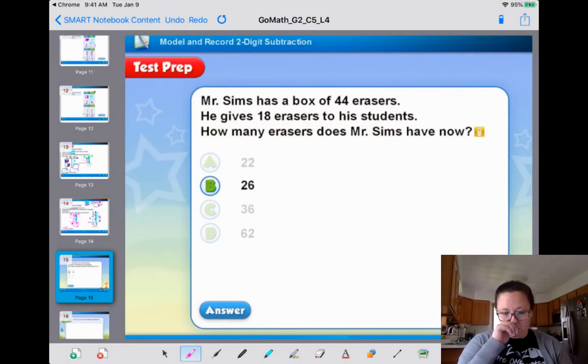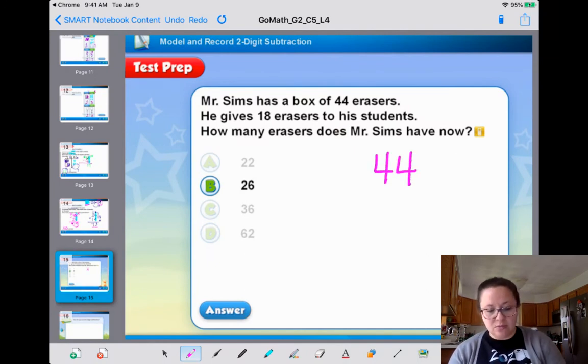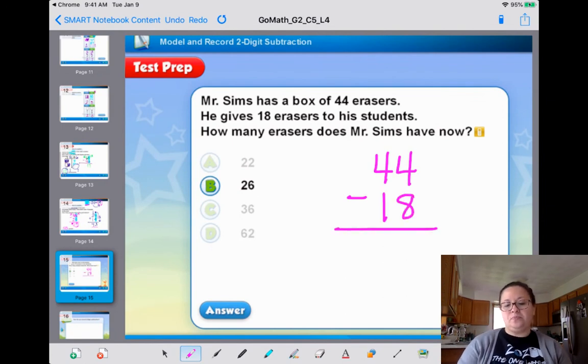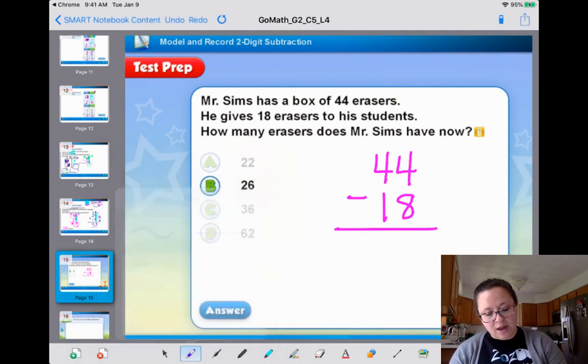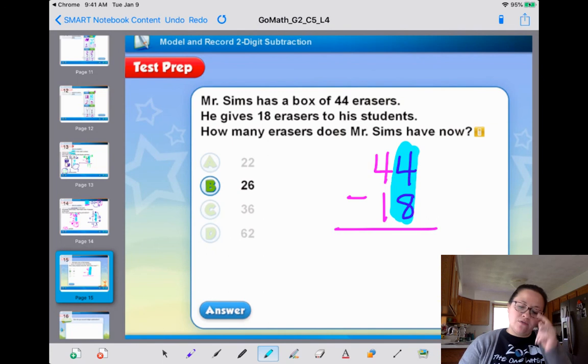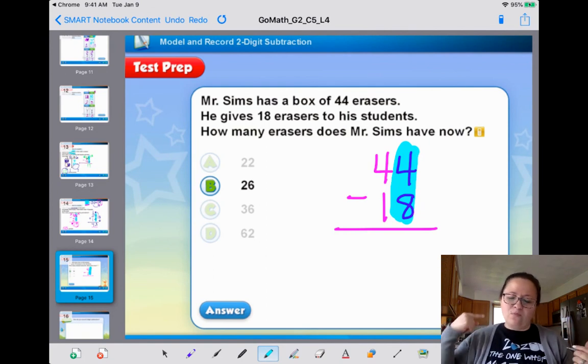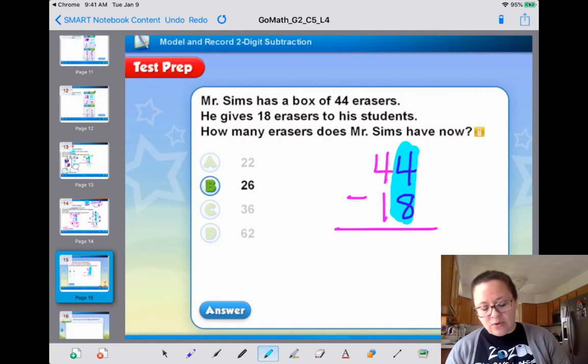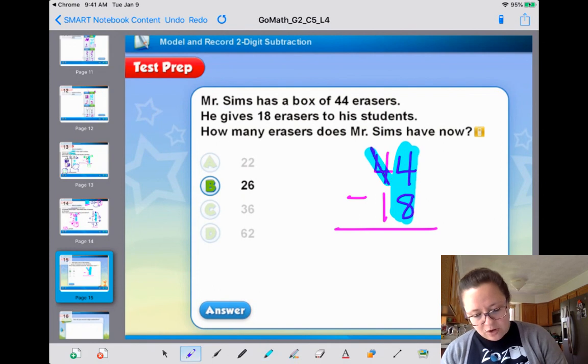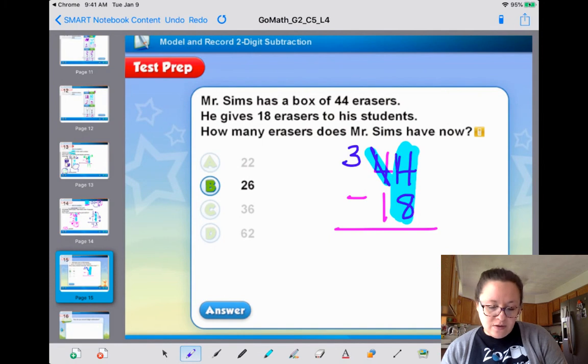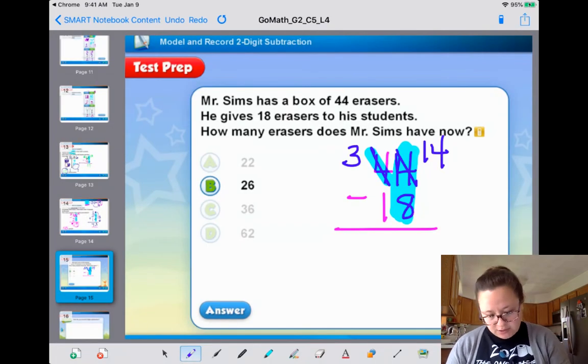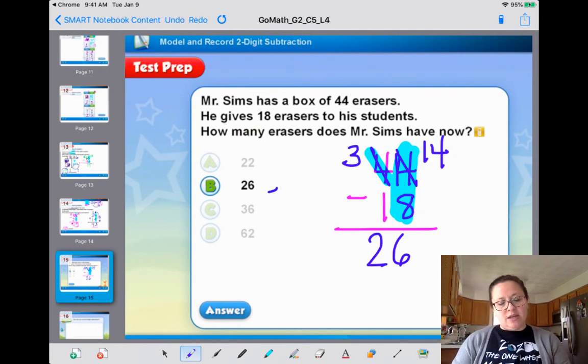Mr. Sims has a box of 44 erasers. Let's write down what we're working with. 44 erasers. He gives away 18. How many does he have? Now let's change the color of my thing. Let's do this. Now we say to ourselves, self, if there's more on the floor, go next door, get 10 more. More on the top, don't have to stop. 8 is higher than 4, and 4 is on top, which means there's more on the floor. Let's go next door. Get 10 more. Cross off the 4. It becomes 3 tens. Now we carry it over. The 4 becomes 14. 14 take away 8. 14, 13, 12, 11, 10, 9, 8, 7, 6. 3 tens take away 1 ten is 2. The answer is 26.